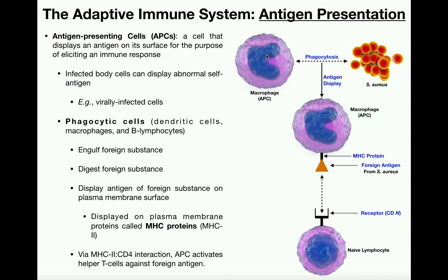The way that works is initially through phagocytosis, and there are multiple cell types that can do this. Three examples would be B cells, macrophages, and dendritic cells. These cells cause phagocytosis of the pathogen — they basically eat the pathogen, digest it, break it down, and then take a piece from it, which becomes the antigen.